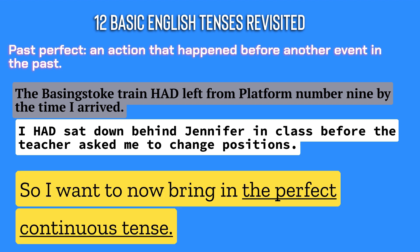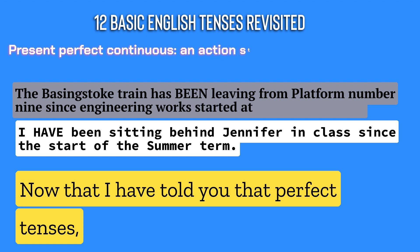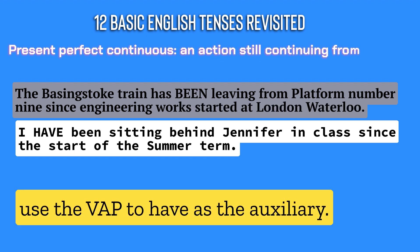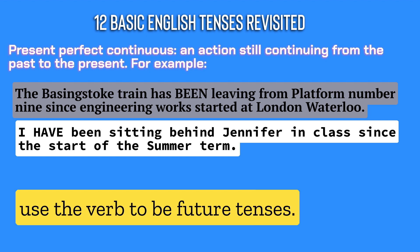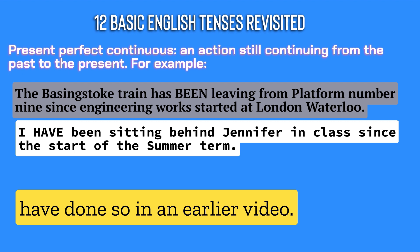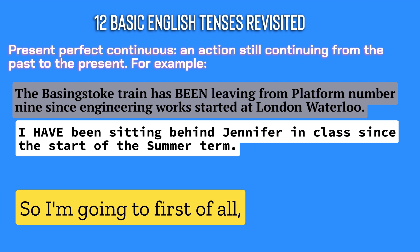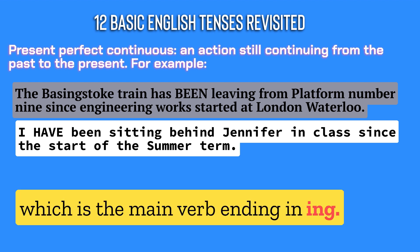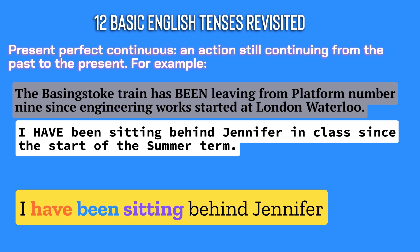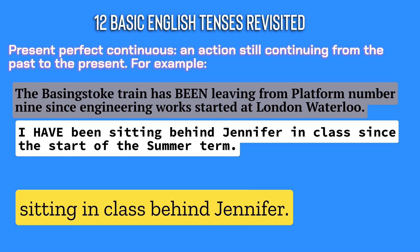I want to now bring in the perfect continuous tense, starting with the present perfect continuous. Now that I have told you that perfect tenses use the verb 'to have' as the auxiliary, you're going to be looking out for that auxiliary. The perfect continuous tenses have three words. Wherever you hear the word 'continuous,' you might expect to find a main verb ending in '-ing.' 'I have been sitting behind Jennifer in class for three years.' You would expect they're still sitting behind Jennifer.